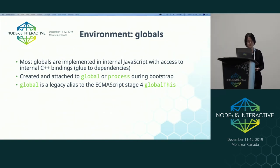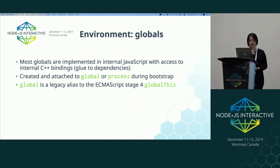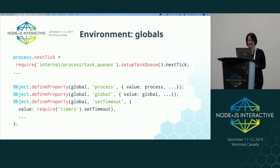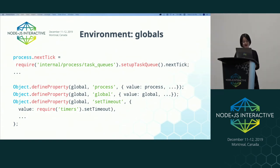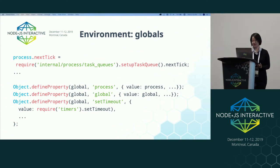After we have an internal loader system set up, Node can start initializing the globals, which are implemented in internal JavaScript with access to internal C++ bindings. These globals are then attached to the global object or the process object. In Node, the global object is now a legacy alias to the ECMAScript-stage globalThis object.